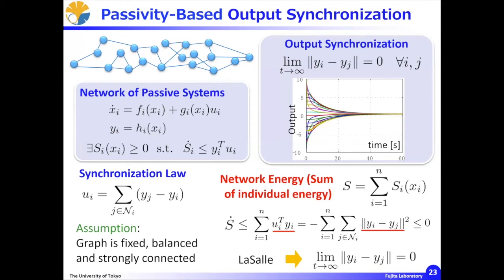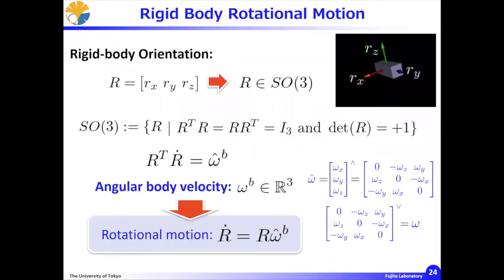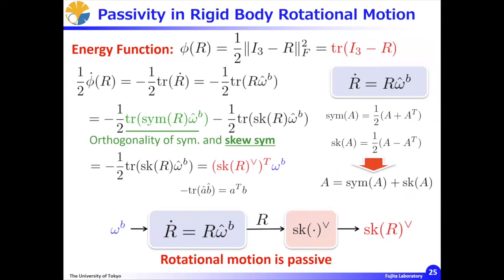Please note that passive systems include Lagrangian dynamics such as a robot manipulator, and rigid body motion such as a flying drone. Recall that the rigid rotational motion can be written as R-dot equals R times omega_b wedge, and the rigid body rotational motion is passive due to the skew-symmetric property. A symmetric matrix and a skew-symmetric matrix are orthogonal to each other, so their trace becomes zero. From this skew symmetry, we can say that the rotational motion is passive.